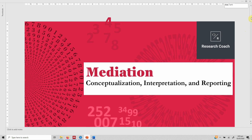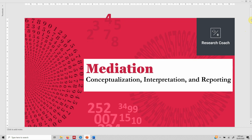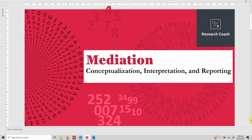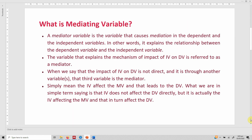In this session we are going to talk about mediation — the conceptualization, interpretation, and reporting of mediation. A mediator variable is the variable that causes mediation between the dependent and the independent variables. In other words, it explains the relationship between the dependent variable and the independent variable. The variable that explains the mechanism of impact of the independent variable on the dependent variable is referred to as a mediator.